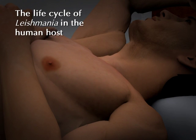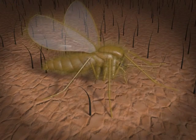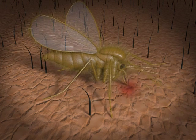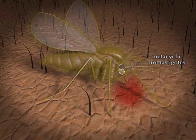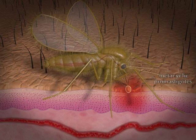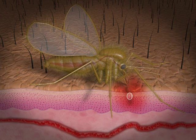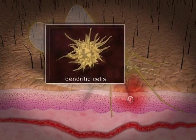The life cycle of Leishmania in the human host begins with a female sand fly insect infected with Leishmania biting a human host. Following the ingestion of blood, the metacyclic promastigotes are released and enter the host through the bite site by regurgitation. The parasite reaches the mammalian skin and subsequently invades different cell types that it encounters.